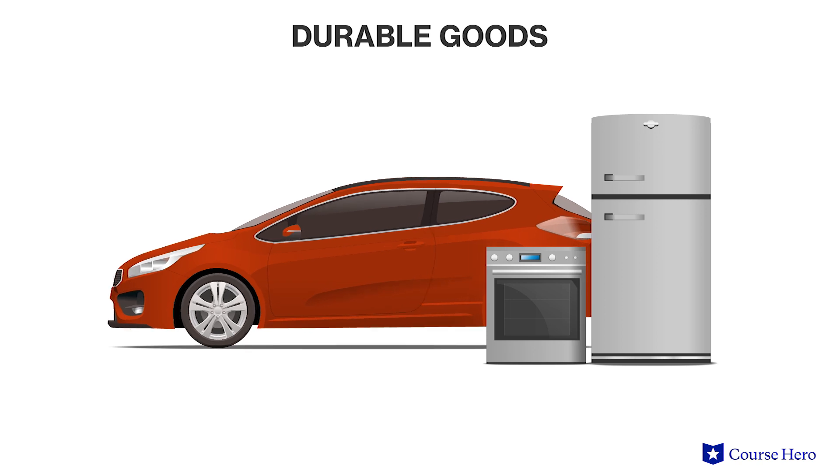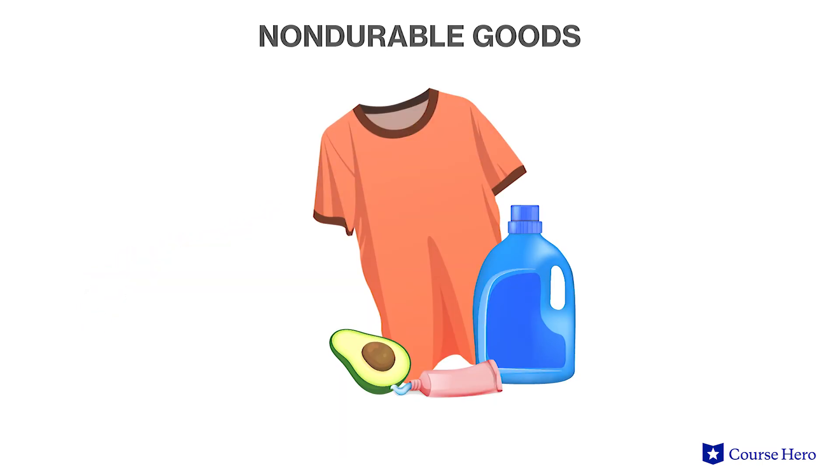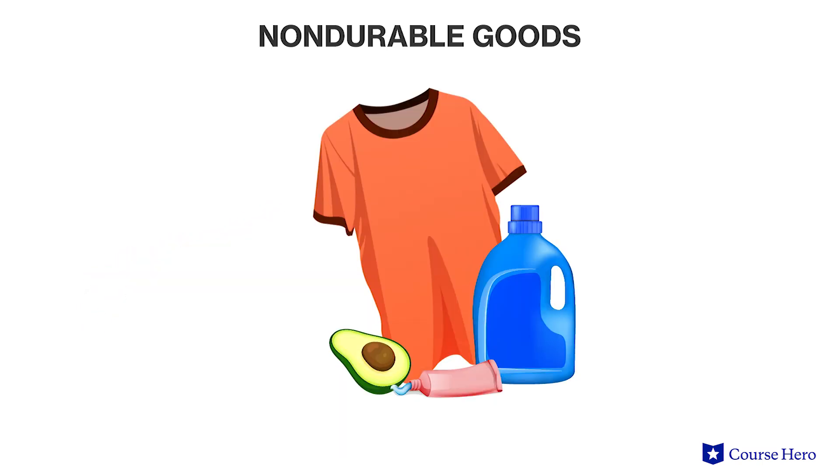Durable goods are long-lasting products such as vehicles and appliances. Non-durable goods, in contrast, are products that have a short lifespan such as food, clothes, and consumer goods such as toothpaste and laundry detergent.